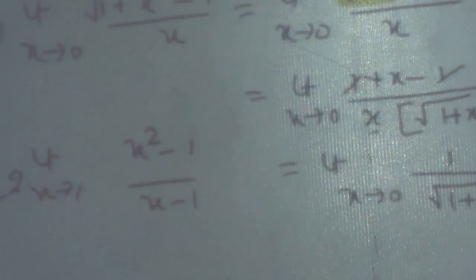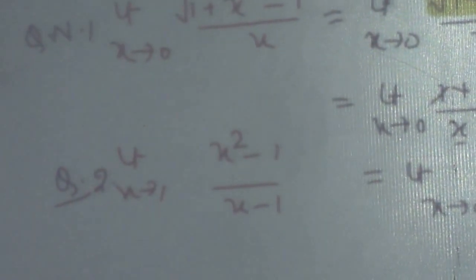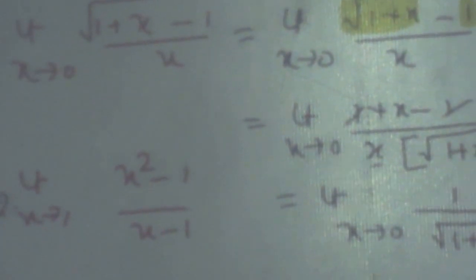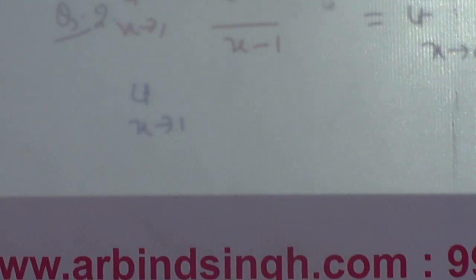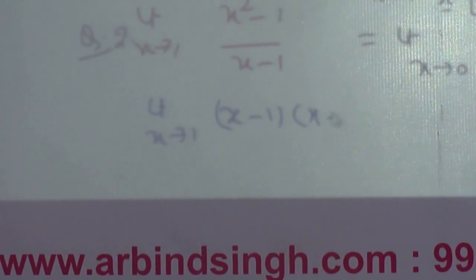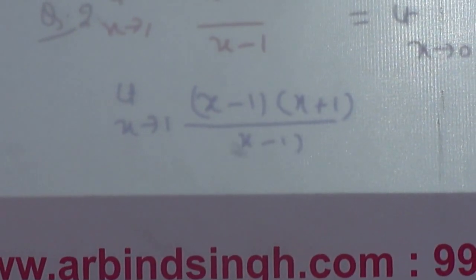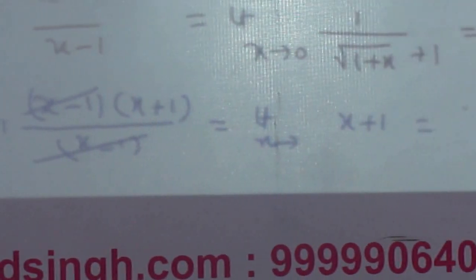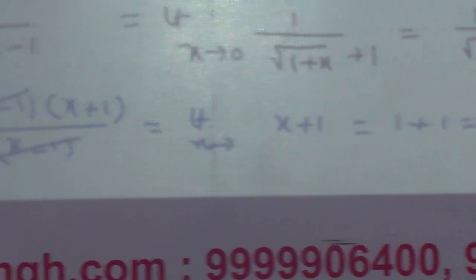For question 2 — limit x tends to 1 of (x² − 1) / (x − 1) — this is not an irrational function, so we use factoring. We factor the numerator: (x−1)(x+1) / (x−1). The (x−1) cancels, leaving limit x tends to 1 of (x+1). Now substituting x = 1 gives 1 + 1 = 2, a finite answer.